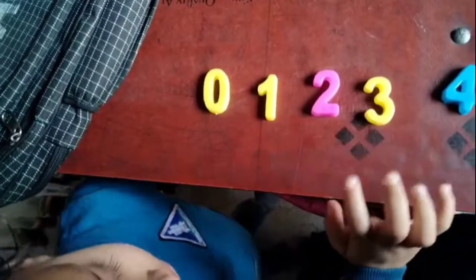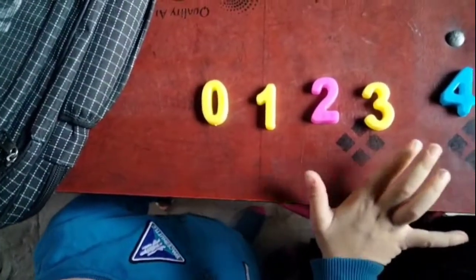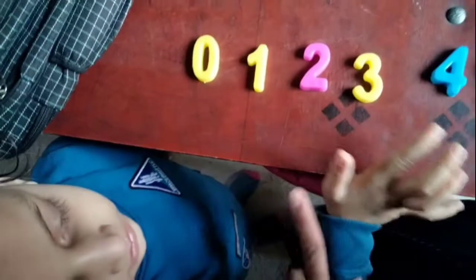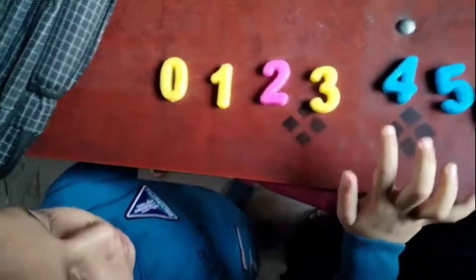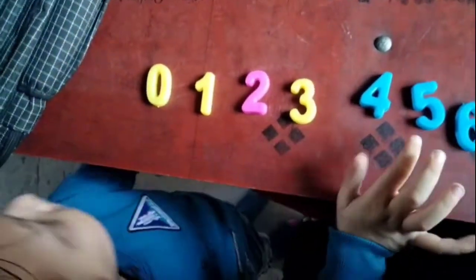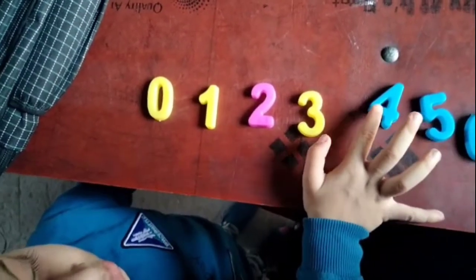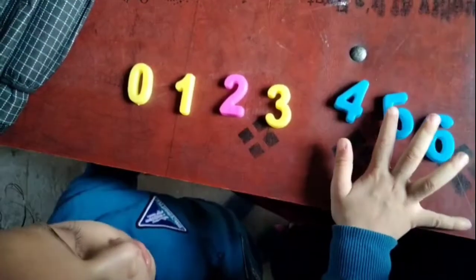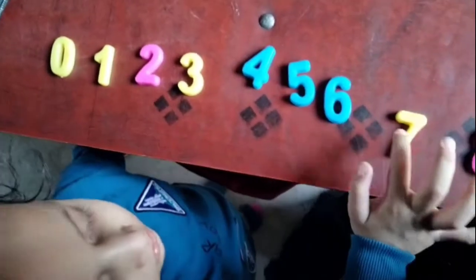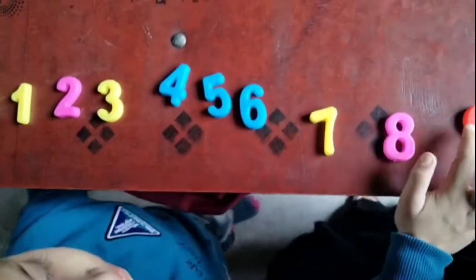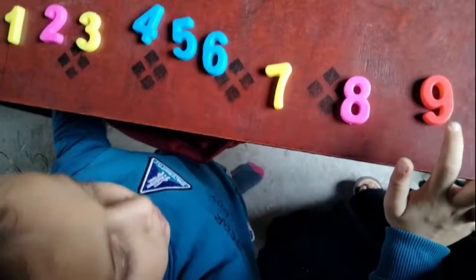2, 3. This is 3. Which number is 3? 3. This is 3. 4. 5. 6. 7. 8. 9.